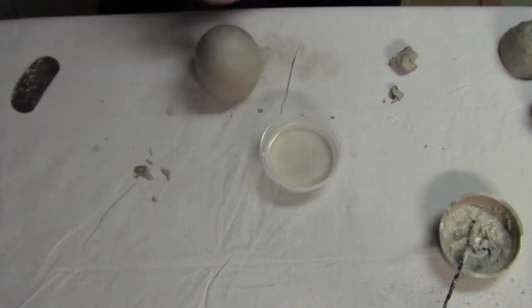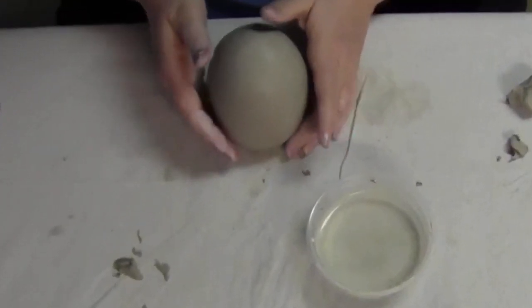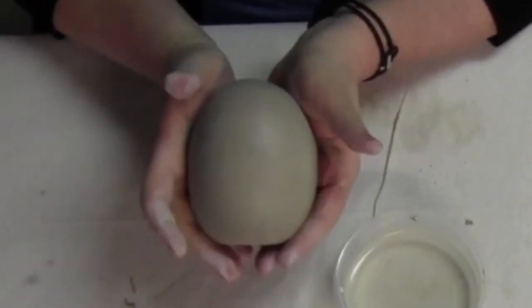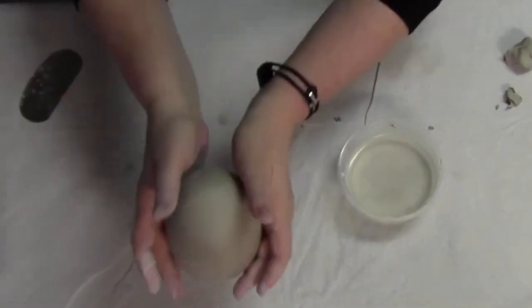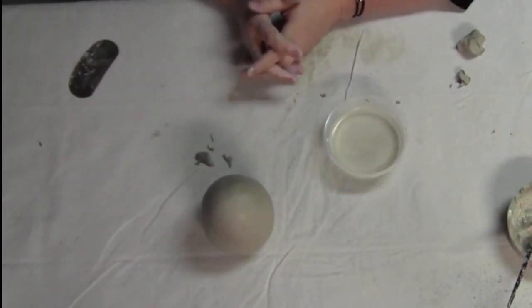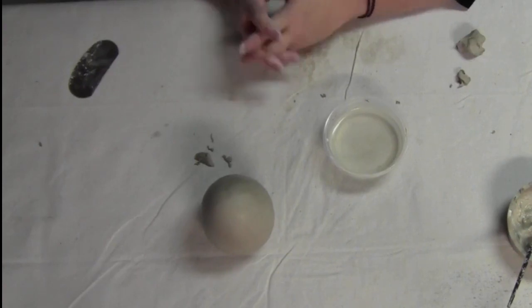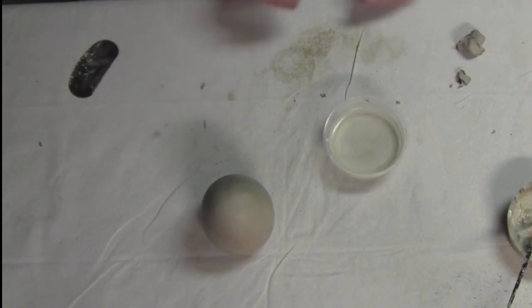So at this point, my combined pinch pots are fairly lump and dent free and I can set it aside and wait for it to stiffen up a little bit more before I manipulate the surface. And then I'll kick it off.